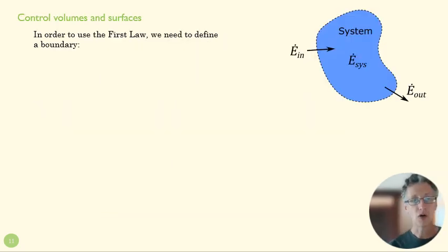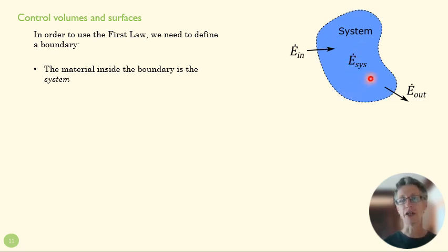All right. In order to use the first law, we have to think about what a system is and how we define that. So we define a boundary, and then we call whatever is inside that boundary a system. Now, that can be anything, anything that has some kind of mass or volume that we can talk about as a separated space.